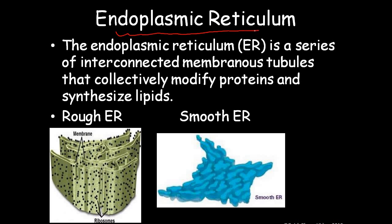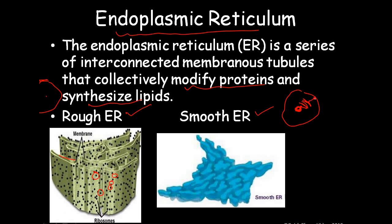The endoplasmic reticulum is a series of interconnected membranes and tubes that collectively modify proteins and synthesize lipids. It is of two types. The rough endoplasmic reticulum is a network of continuous sacs studded by ribosomes. It forms the internal delivery system in the cell between the nucleus and the outer membrane.